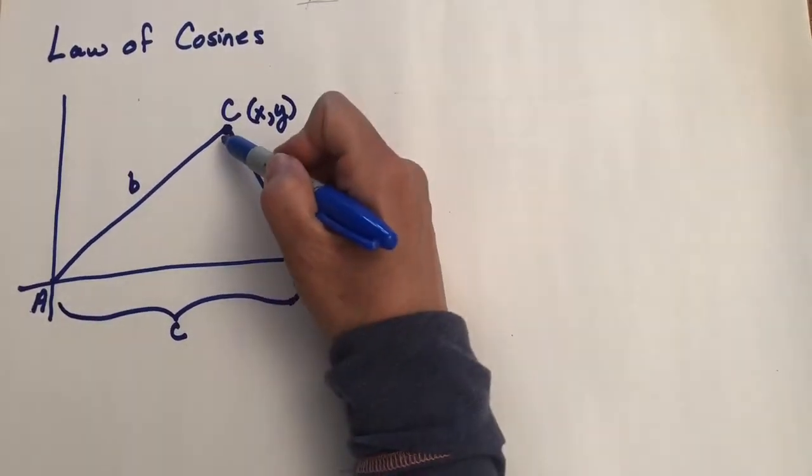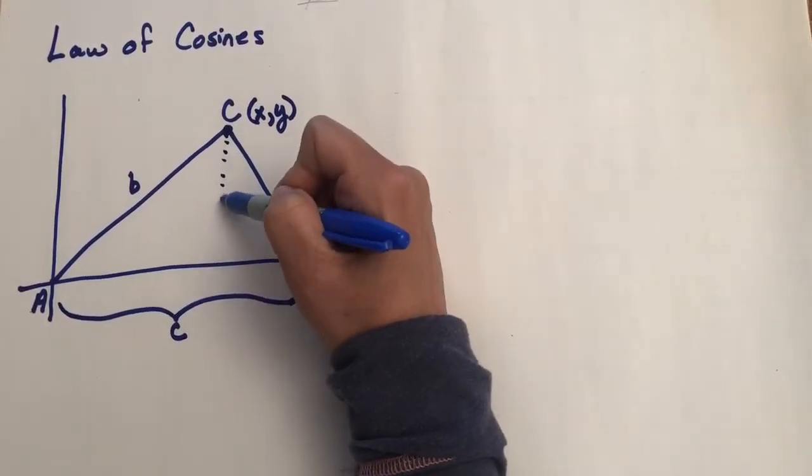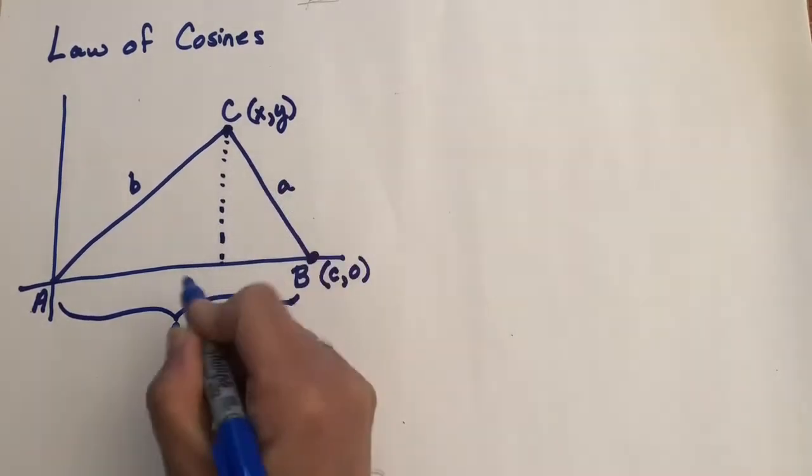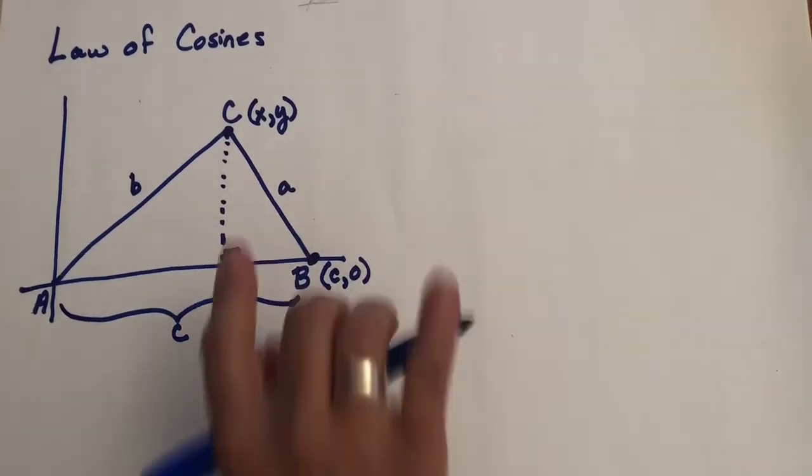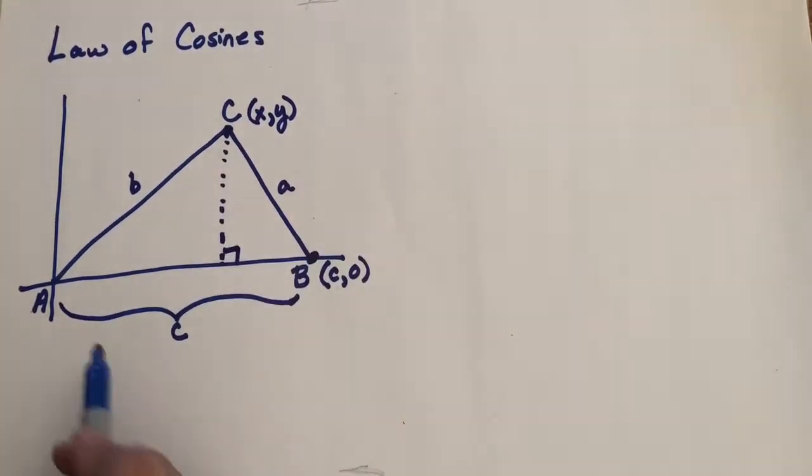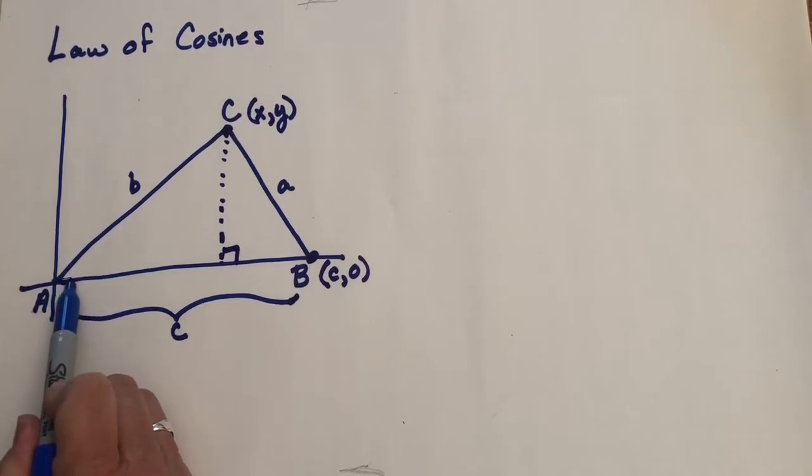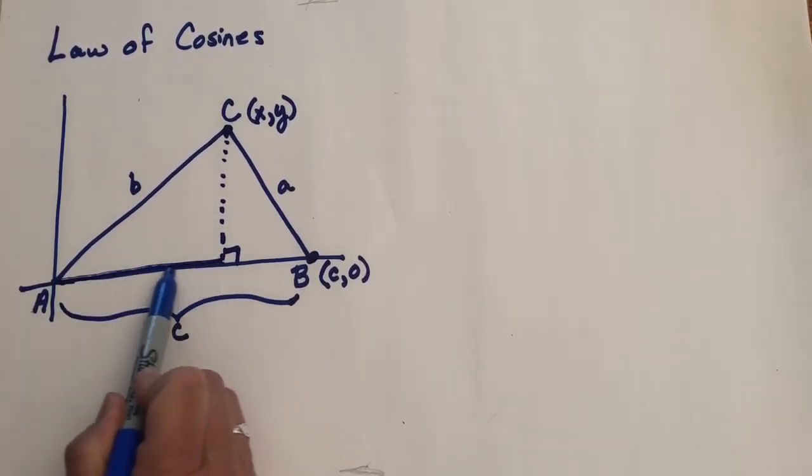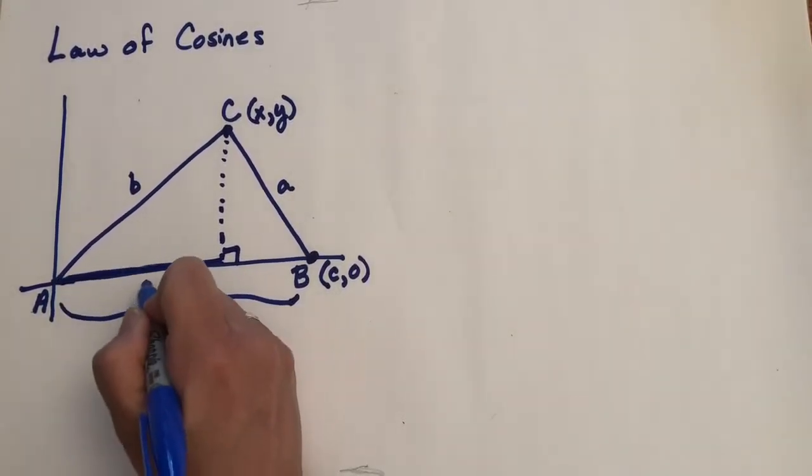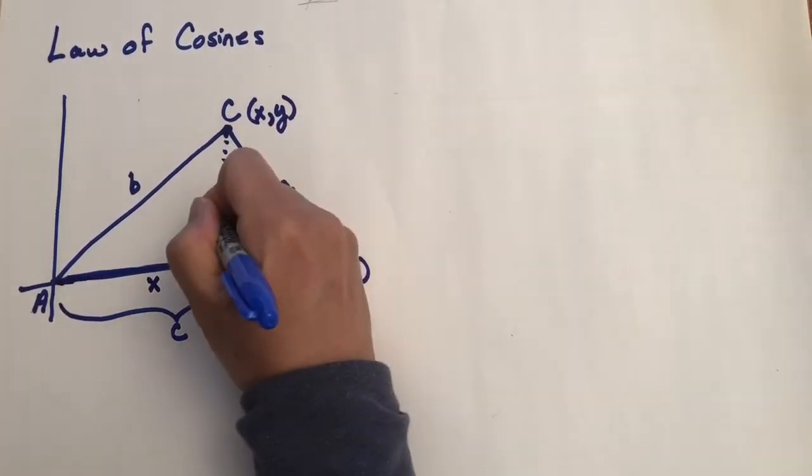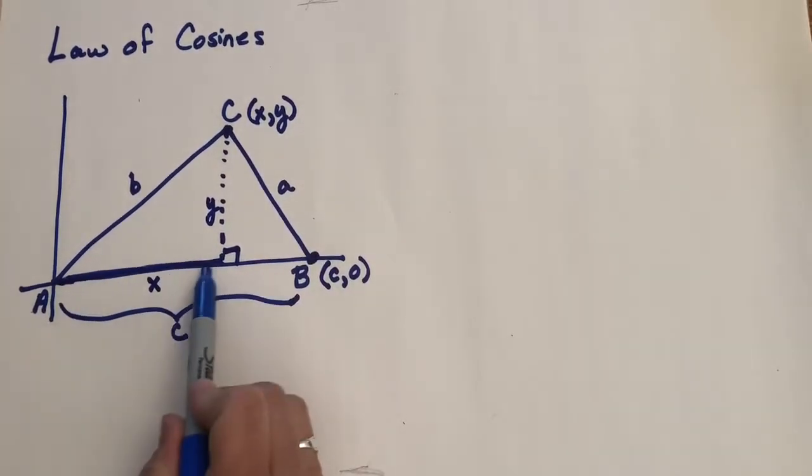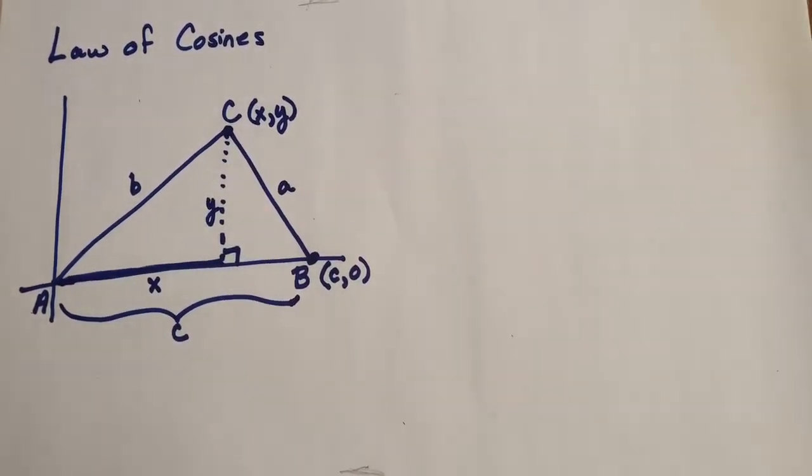I do want to drop an altitude from C down to the opposite side. And of course that means it's a right angle right here. And because C is the point X,Y, I know this length right here would be X. And the altitude here would be Y, since this point is X,Y. So over X up Y to get to the point X,Y.